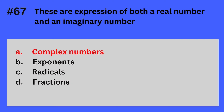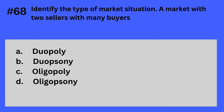Question 68. Identify the type of market situation: a market with two sellers with many buyers. A. Duopoly, B. Duopsony, C. Oligopoly, D. Oligopsony. The answer is A — Duopoly.